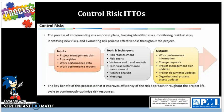Next we'll be going over the inputs, tools, techniques, and outputs — ITTOs — for control risk. We have the project management plan as an input, then the risk register which is an output from the identify risk process. Then we have work performance data, which includes raw observations such as deliverable status, schedule progress, and cost incurred.